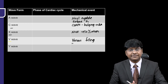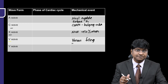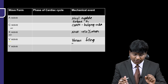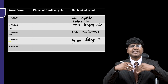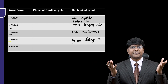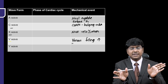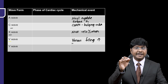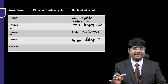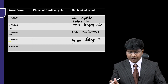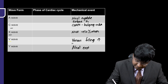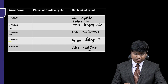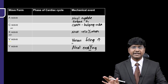Then comes the Y wave, which is again a negative deflection. The Y wave is due to atrial emptying. During venous filling, right atrial pressure becomes elevated. That increased right atrial pressure opens the tricuspid valve, and blood from the right atrium gushes into the right ventricle, resulting in atrial emptying — and that is the Y wave.